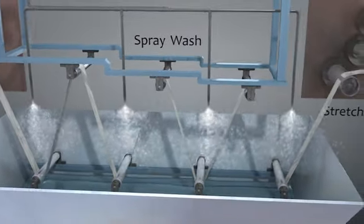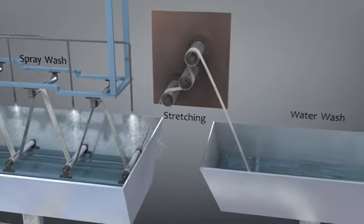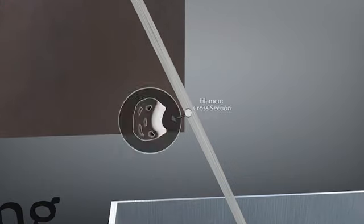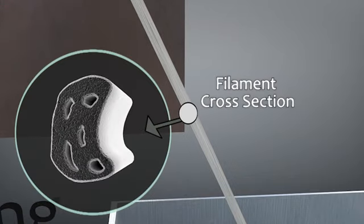As the solution is washed away and the filaments are stretched, the porous voids collapse, aligning molecular orientation to create a stronger fiber and the desired fiber diameter.